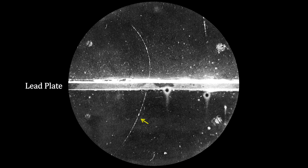This particle came up from the bottom and is curving counterclockwise, indicating that it has a positive charge. You'll note that its curvature increases after passing through the lead plate. This curvature indicates that its mass is the same as an electron. This was the discovery of the positron.